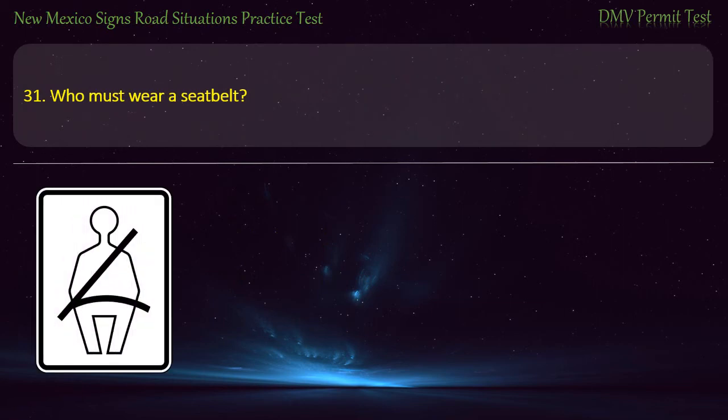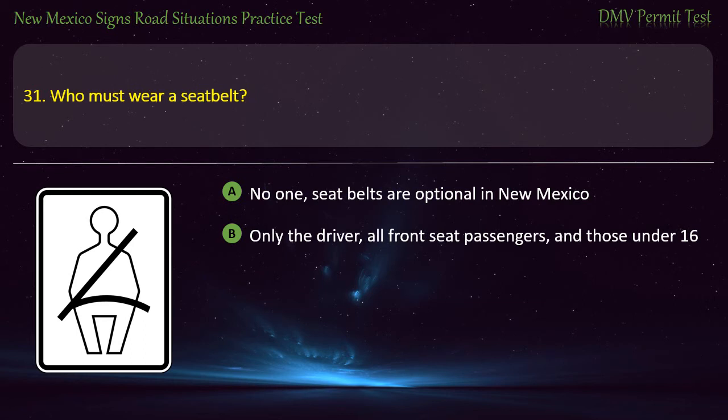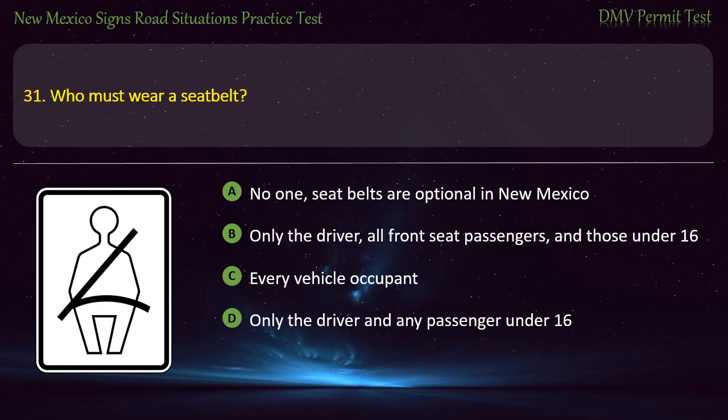Question 31. Who must wear a seatbelt? Options: No one, seatbelts are optional in New Mexico; only the driver, all front seat passengers, and those under 16; every vehicle occupant; or only the driver and any passenger under 16. Answer: Every vehicle occupant.